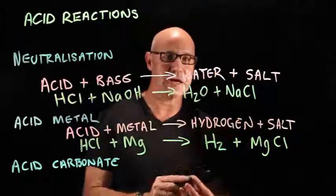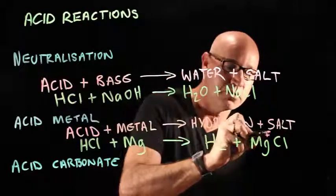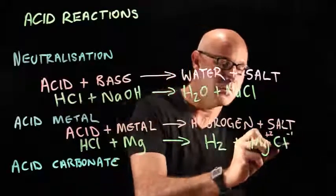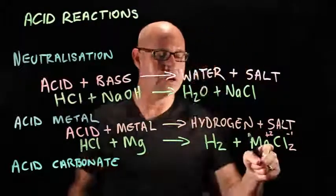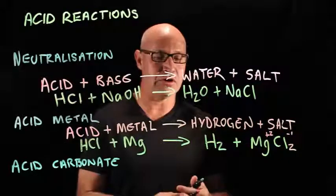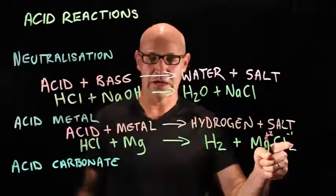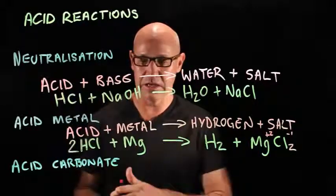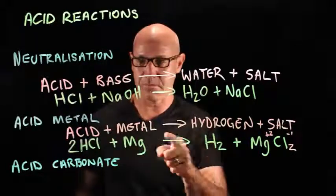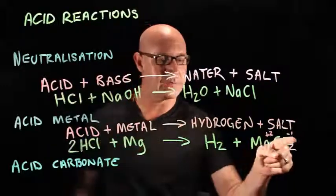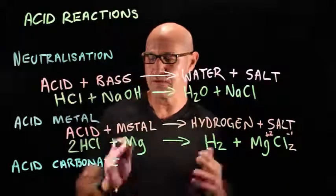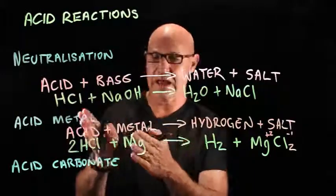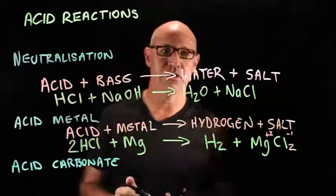But we're not quite finished, because magnesium is plus two and chloride is minus one. So if we cross over, we're going to have MgCl₂ as the ionic formula. We need to put a two in front of the HCl — now we've got two hydrogens, two chlorines, and one magnesium. So that's an acid and a metal, and it produces hydrogen gas.